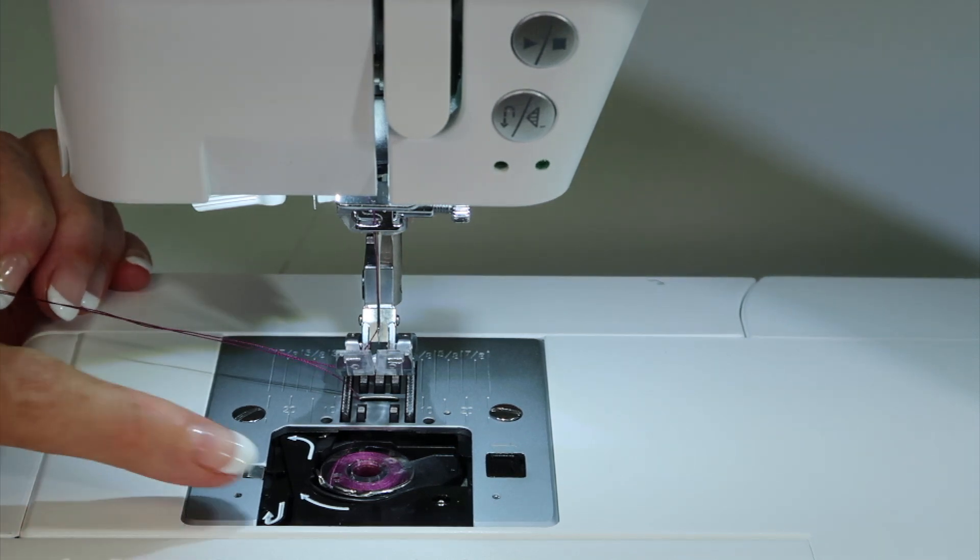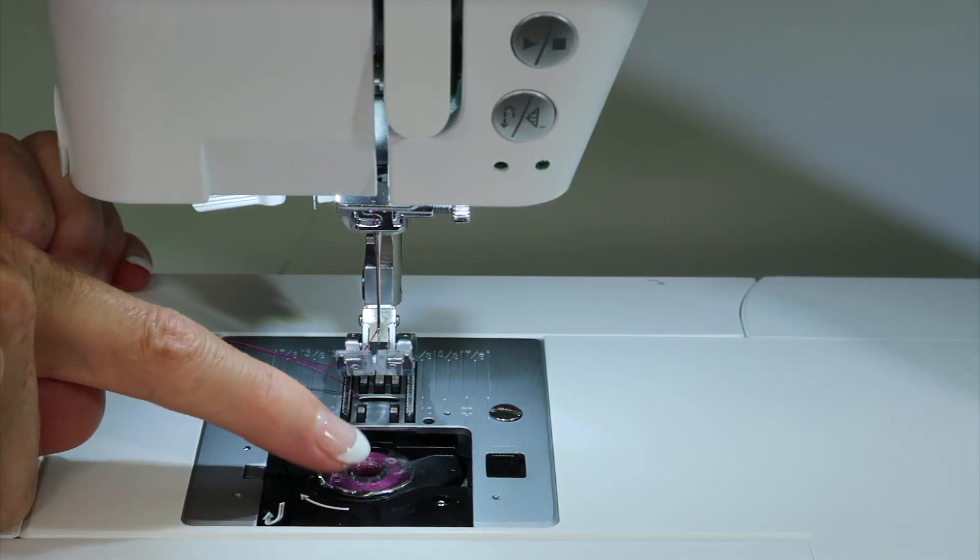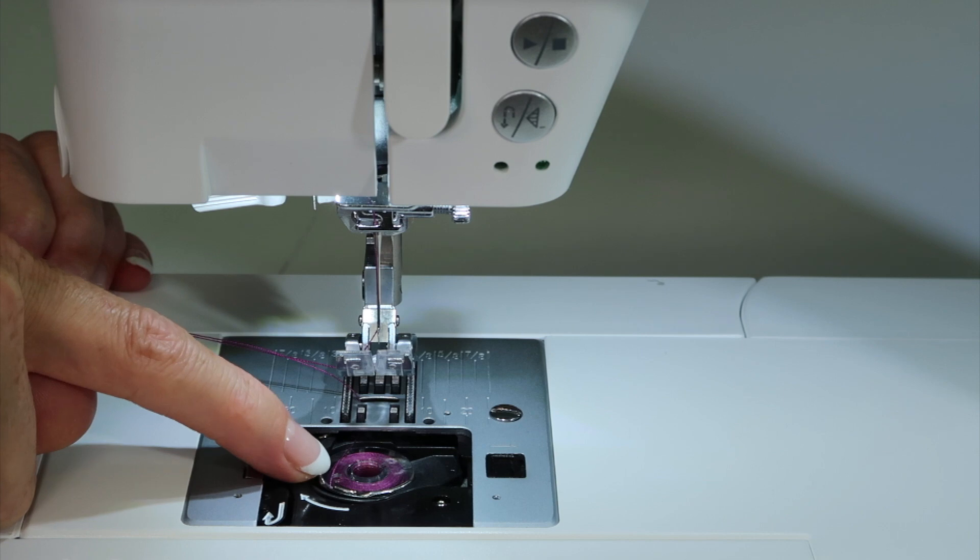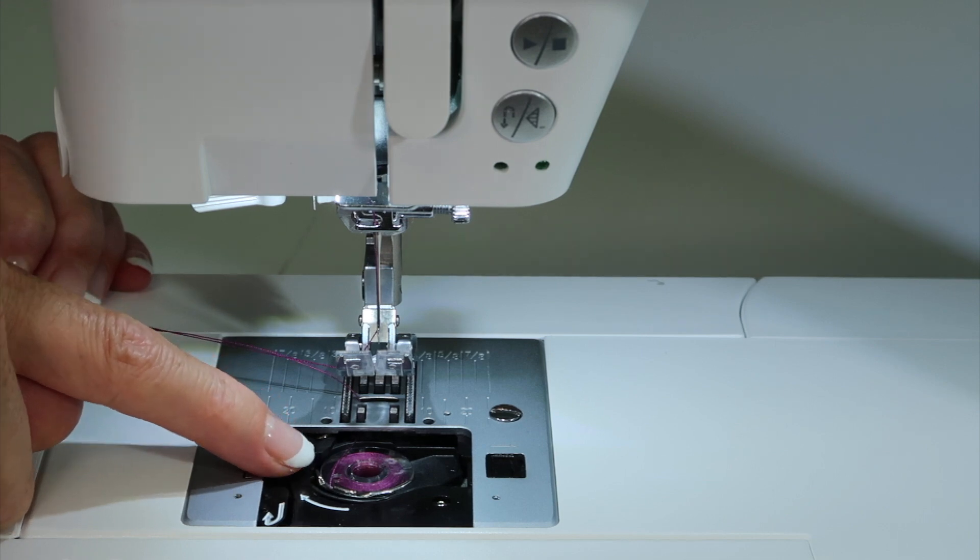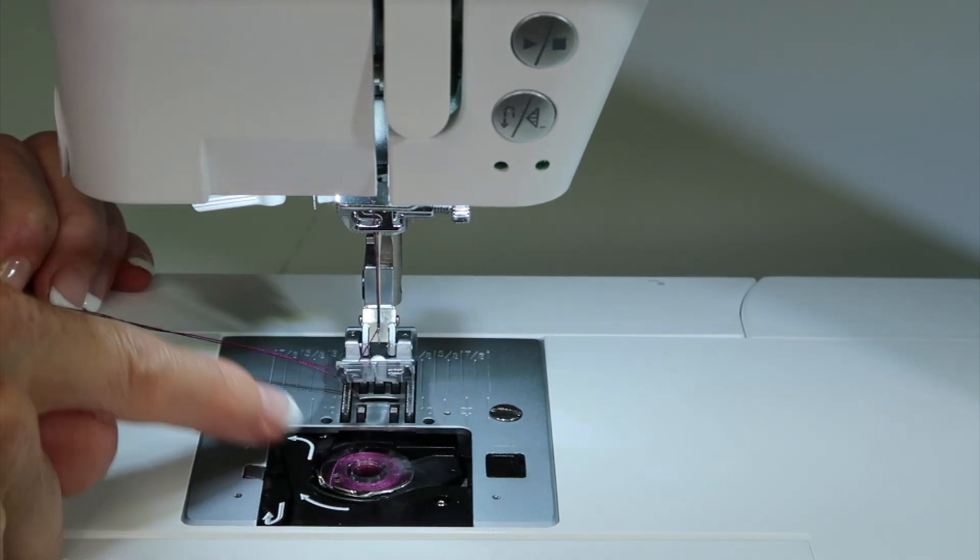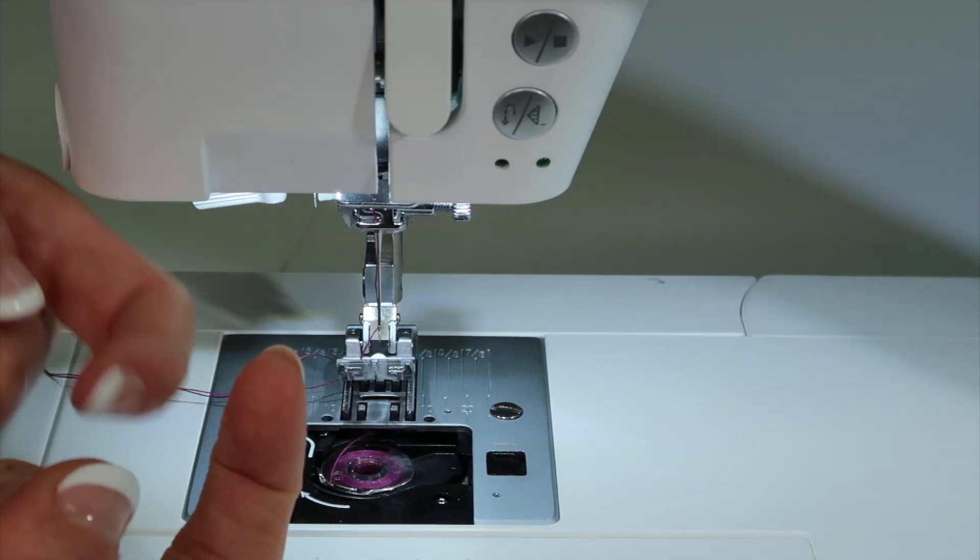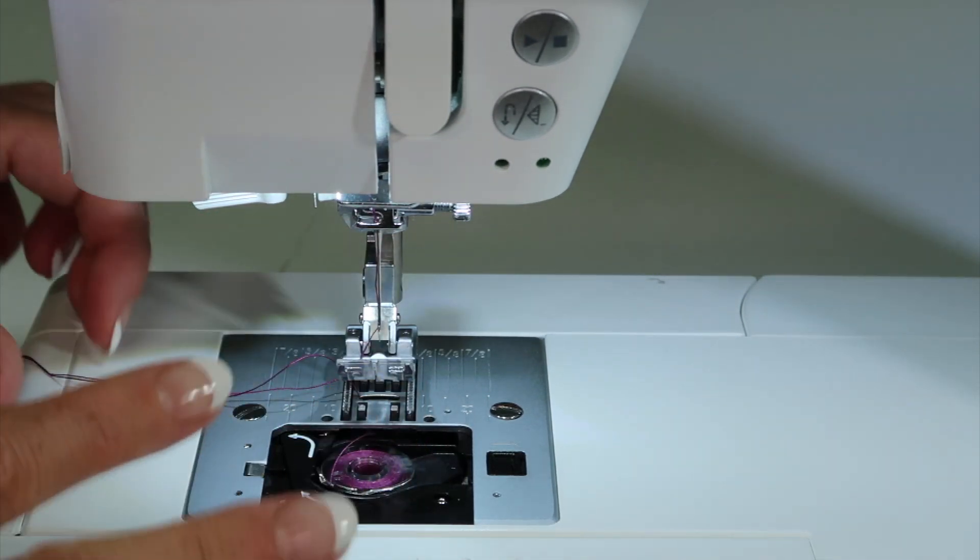A couple of things here. Number one, when you wind a bobbin, if there's a little tail sticking out of the top of the bobbin, make sure it's cut off, because every time this stitch comes around, it's got to come and flick across that tail. Not so great.